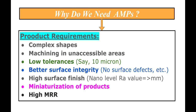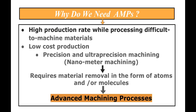For machining these miniaturized components, processes other than conventional machining are definitely required. Industry people always demand high production rates — processes that give high productivity while processing difficult-to-machine materials. They also demand that the cost of production should be as low as possible so they can have higher profit.